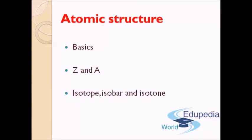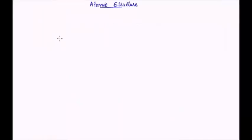So let us start our discussion on atomic structure. Towards the end of the 19th century, J.J. Thomson found out the existence of electrons. After that, Rutherford in his famous scattering experiment found out the existence of the nucleus. This work and work from other scientists led us to the understanding of atomic structure.